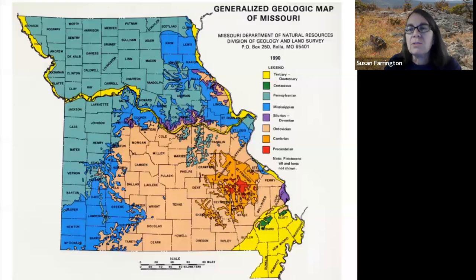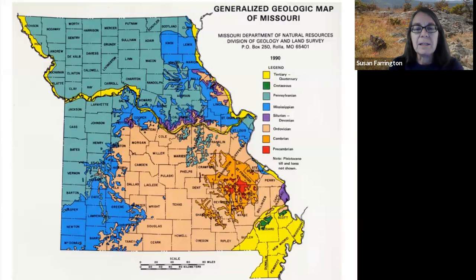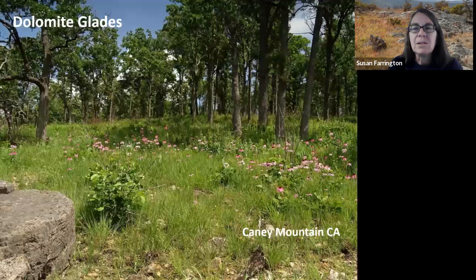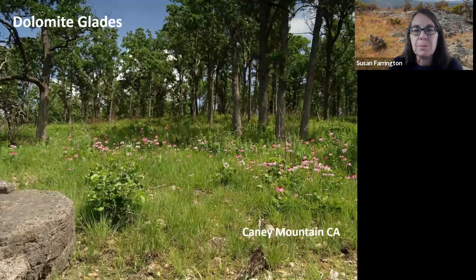Looking at a generalized geologic map of Missouri, the peach area is where we find dolomite glades. The bright blue area is where we see limestone glades. The red areas are where we find igneous glades. And sandstone glades are interspersed in the northern section of the Ozarks. Dolomite glades are the most common type in Missouri, so we'll start with them. I'll go into a lot of detail for them, but much of the information will be applicable to the other types.